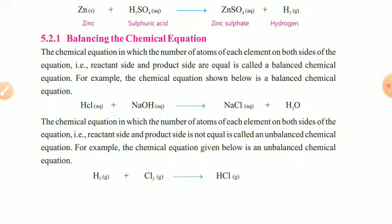An unbalanced chemical equation is one in which the number of atoms of each element on both sides — the reactant side and the product side — are not equal. So there is an unequal number of atoms on each side, making it an unbalanced chemical equation.